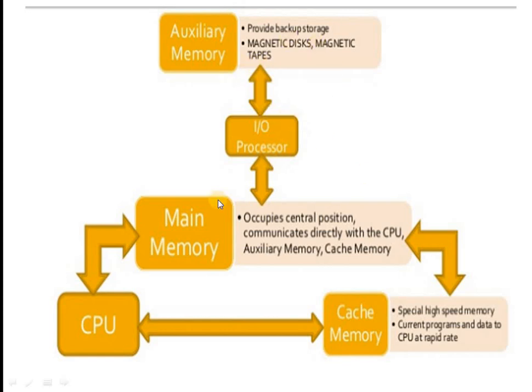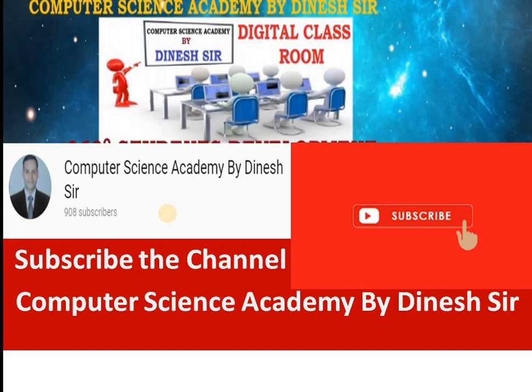We have discussed how auxiliary memory is associated with main memory, CPU, and cache memory. Through the input-output process, data is taken, processed, and finally displayed to the user. In this video we learned the concept, architecture, and functionality provided by auxiliary memory.